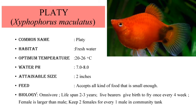Platy fish, which is scientifically called Xiphophorus maculatus, is also a beautiful ornamental fish. The common name is Platy. It lives in freshwater habitat. The optimum temperature suitable for this fish is 20 to 26 degrees C. The water pH should be between 7.0 to 8.0. It attains a maximal size of 2 inches. This fish also accepts all kinds of food that are small enough. Basically, this platy fish is an omnivore which lives for 2 to 3 years. It is a live bearer which gives birth to fry once every 4 weeks. Notably, the female is larger than the male, and in community tanks we keep 2 females for every 1 male.